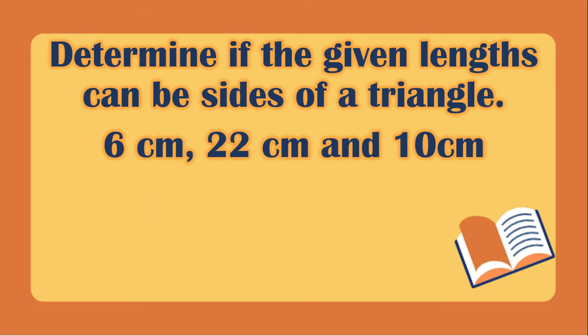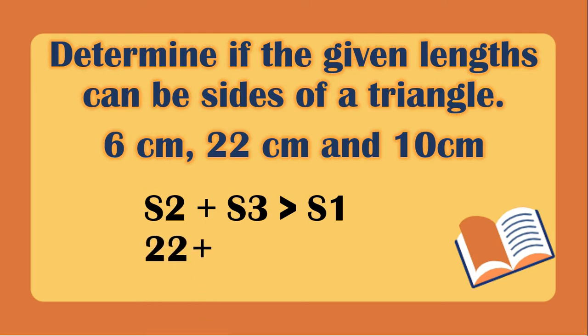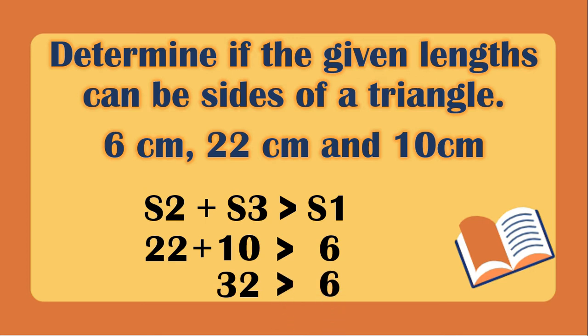Let's have the second combination. Side 2 plus side 3 should be greater than side 1. Side 2 is 22, plus side 3 is 10, should be greater than 6. 22 plus 10 is 32, greater than 6. Still, this is a correct statement.